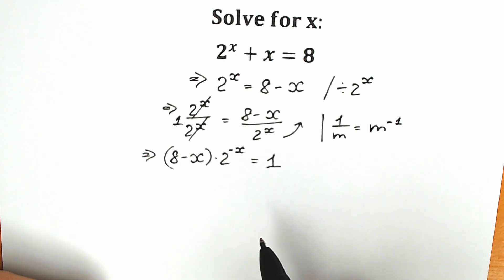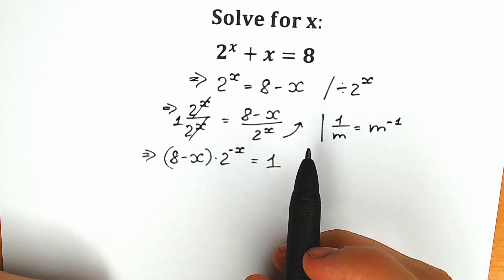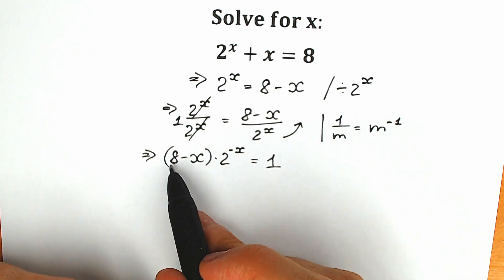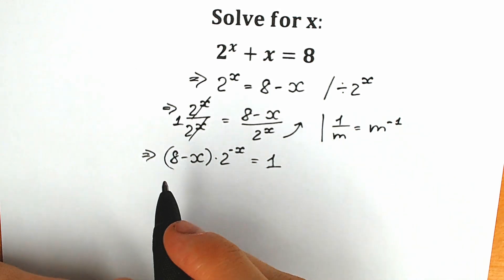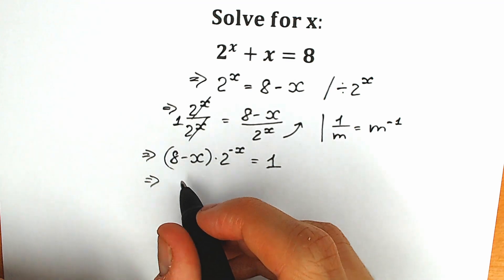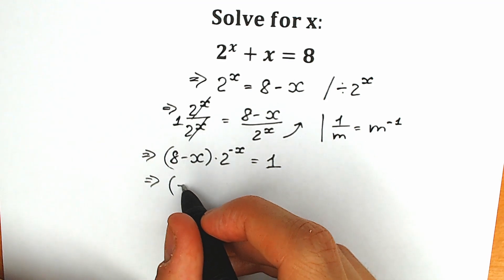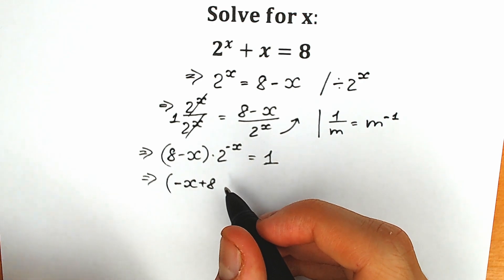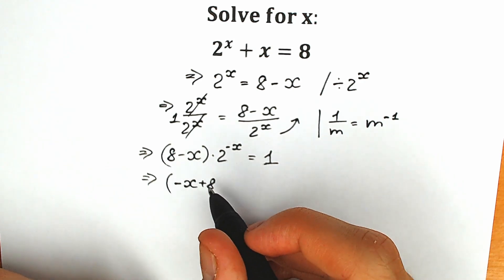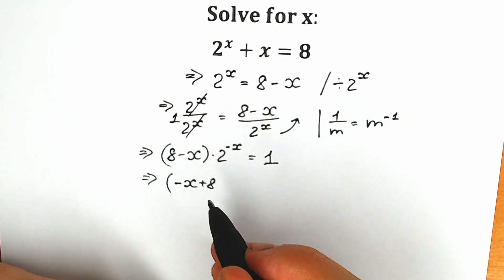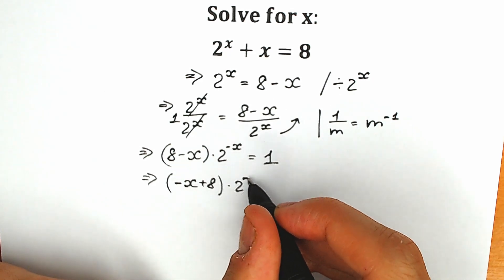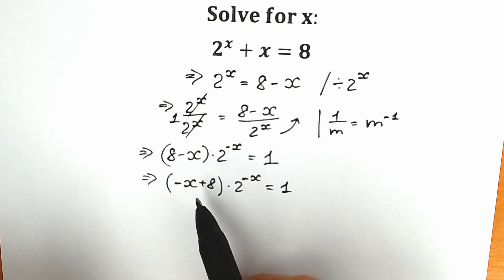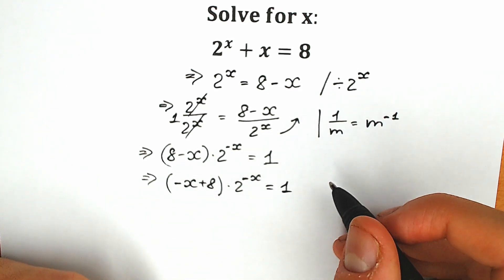So this is our first part — we just do some manipulation with our expression. Next, I suggest changing the order to write it as minus x plus 8, times 2 to the power minus x, equal to 1. This helps us a lot, and we're going to apply the Lambert W function, so it's easier to understand the expression in that form.